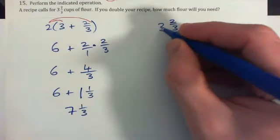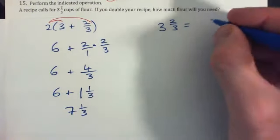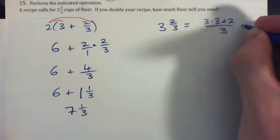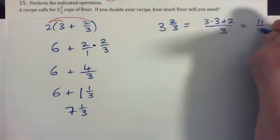What's that as an improper fraction? Three times three is nine, right? Nine plus two, so you go three times three plus two over three, which gives nine and two, eleven-thirds.